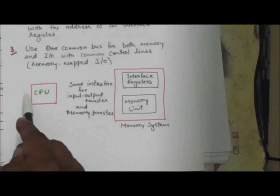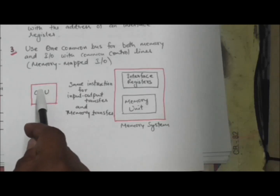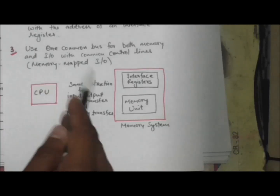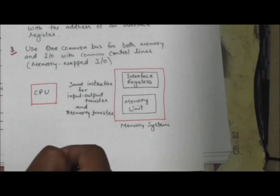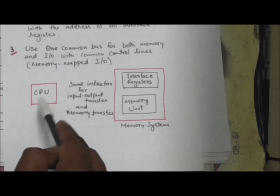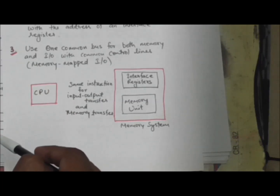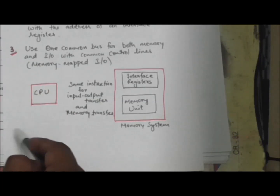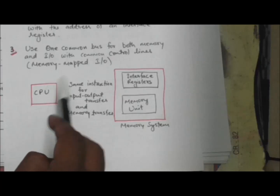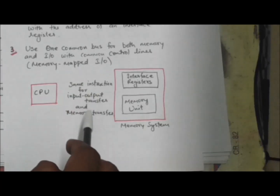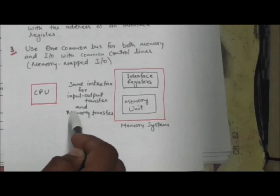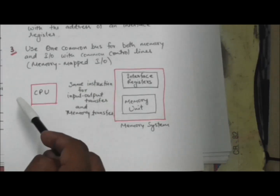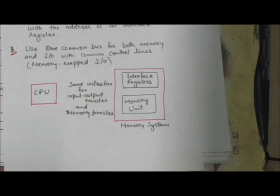In the memory-mapped input-output method, there are no specific input or output instructions. You can manipulate input-output data in the interface register using the same instructions that are used to manipulate memory words. In computers with the memory-mapped input-output configuration, memory-type instructions are used to access input-output data. This allows the computer to use the same instructions for both input-output transfers and memory transfers.